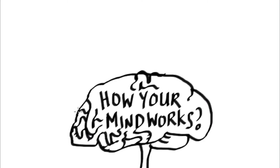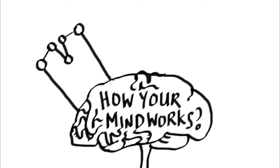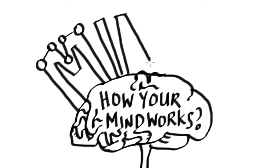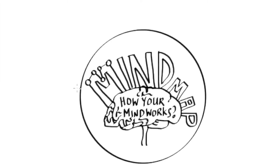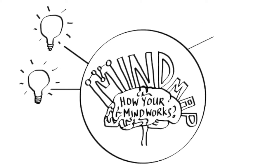Have you ever wondered how your mind works? Your mind thinks of an idea and subconsciously links you to another idea, to another idea, and eventually you get a map of thoughts — a mind map. A mind map starts with a central topic, usually written or drawn in the middle, where ideas or solutions to this topic branch out one by one.